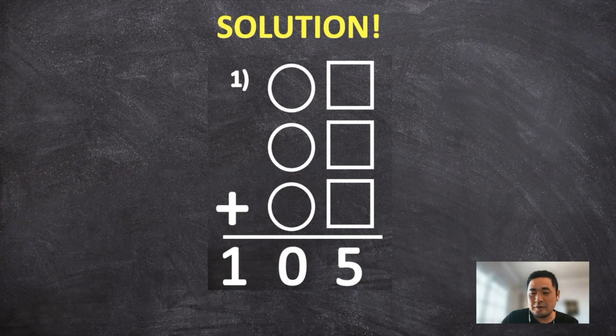So on the first one, as the hint stated, we can think of three squares that are going to equal five. And the only number that would make sense here would be a five.